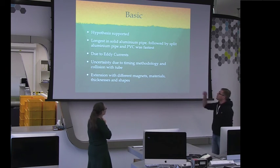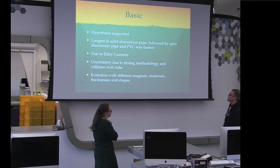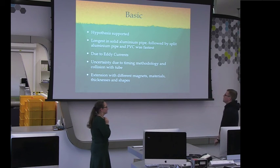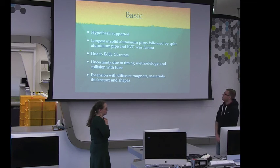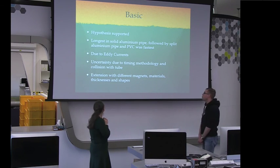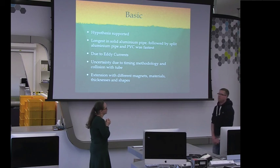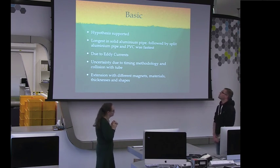And basically dropping the magnets with the PVC was the fastest. And we concluded from that, that is due to the eddy currents that are induced in the metal. And the uncertainty, the biggest error was basically the uncertainty in the timing. And it was also probably due to the friction and the collision of the magnet with the tube. And we could extend on that by using basically different magnets or different materials with different thicknesses and shapes.